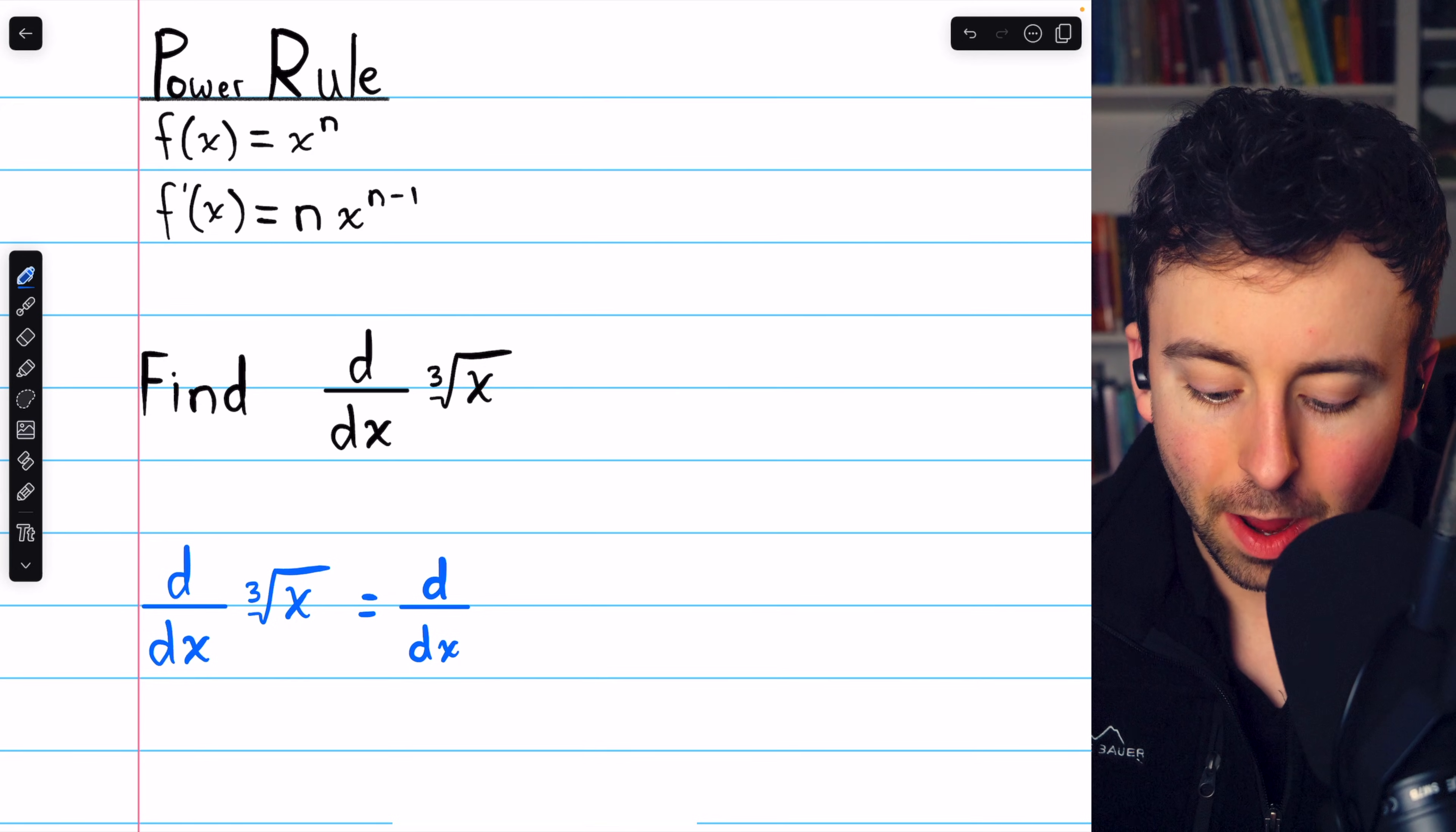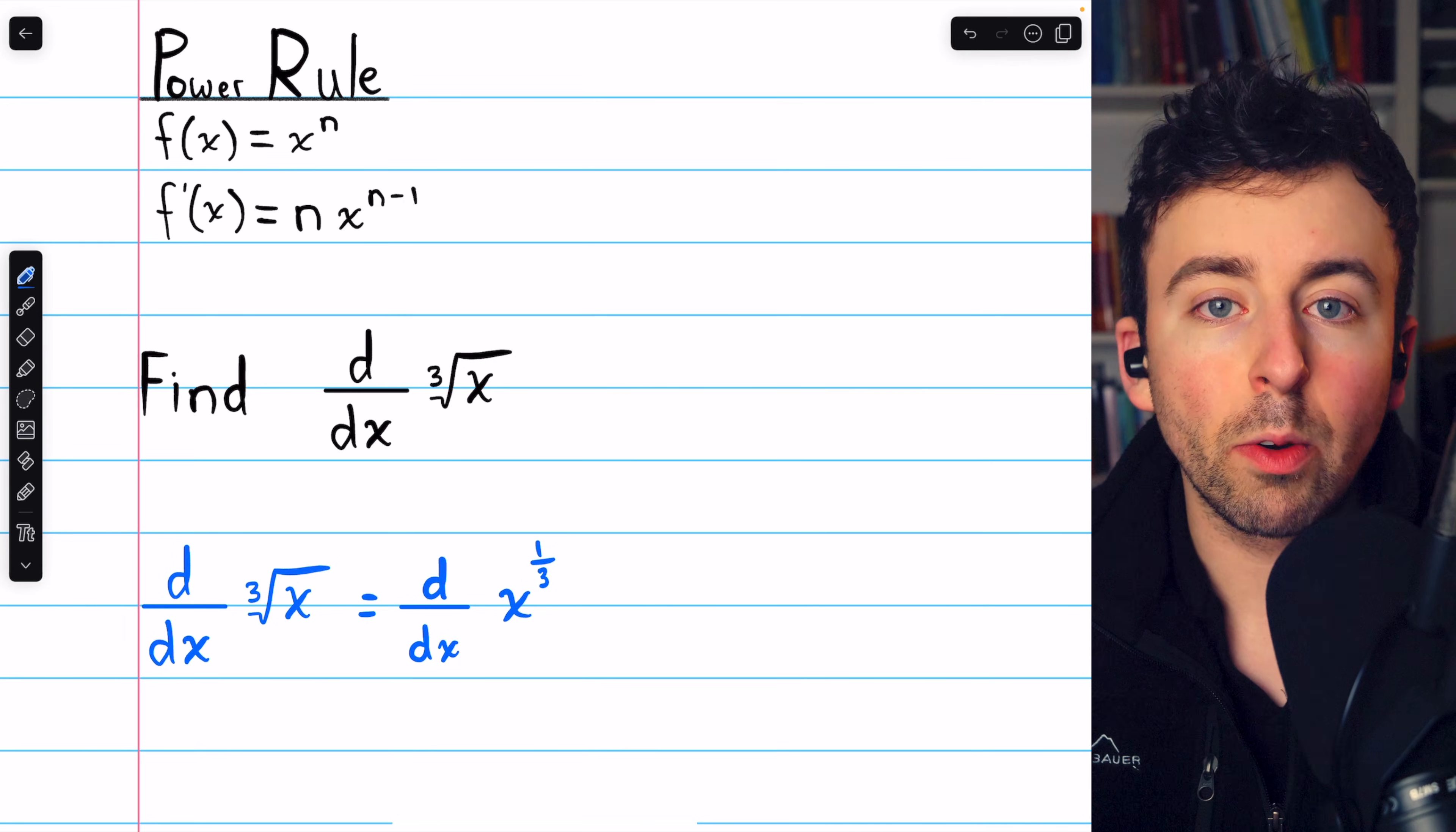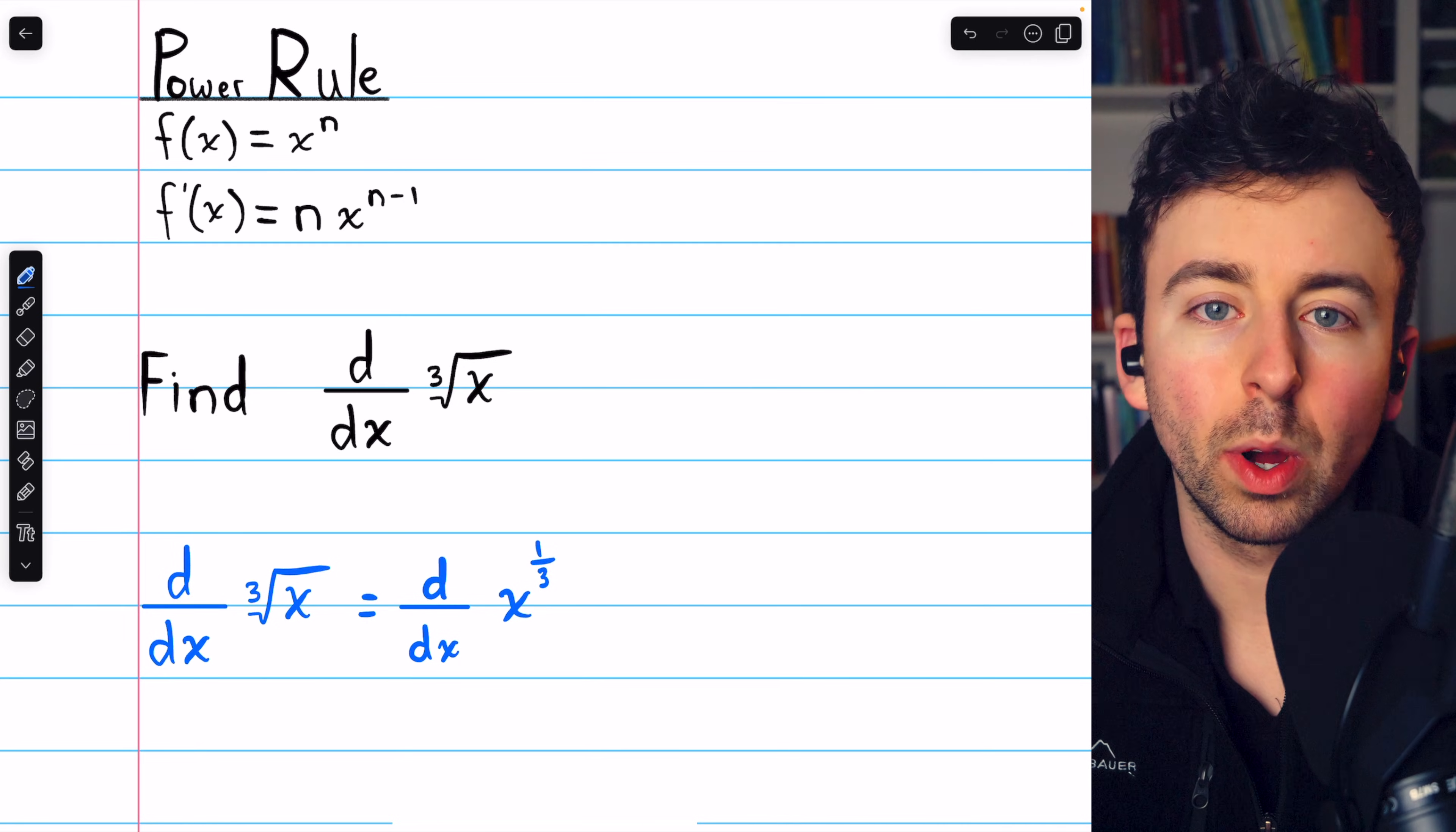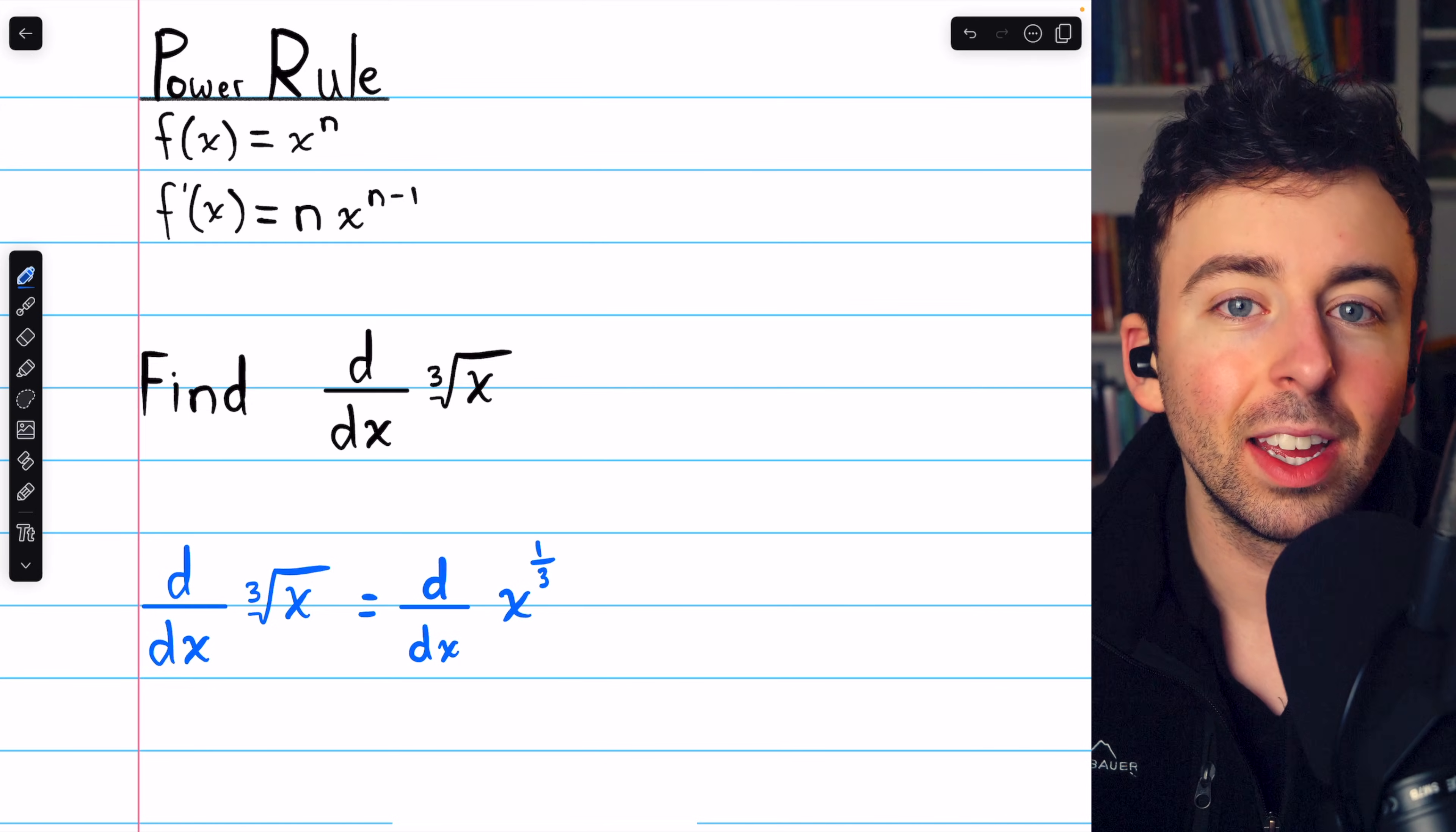is the same as x to the power of one-third. Just like the square root of x is the same as the power of one-half, the seventh root is the same as the power of one-seventh, and so on.